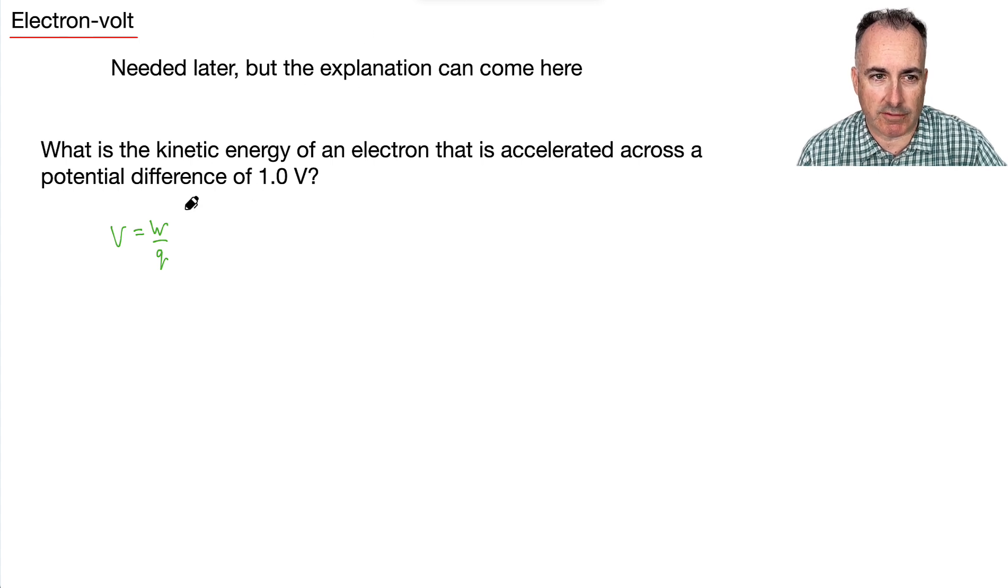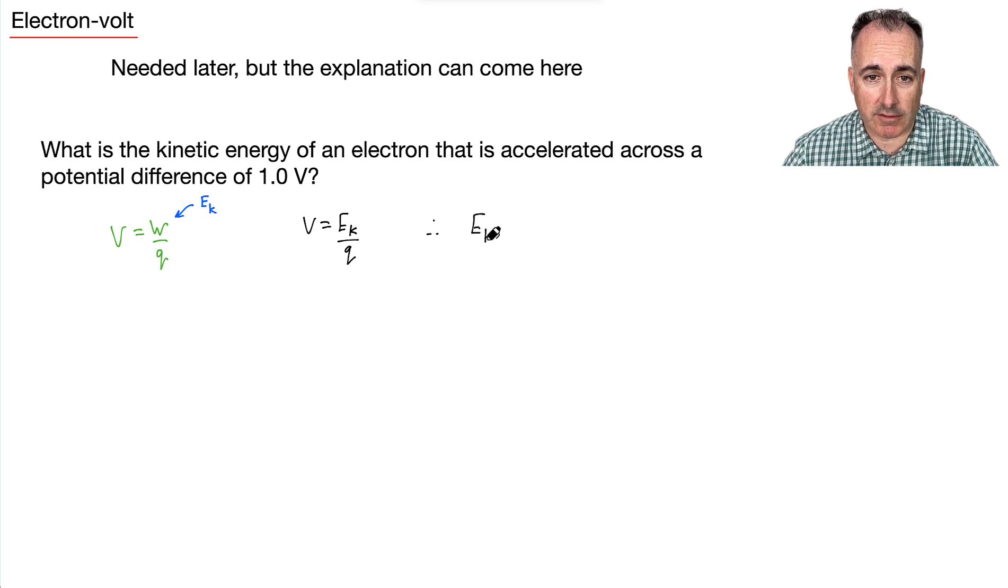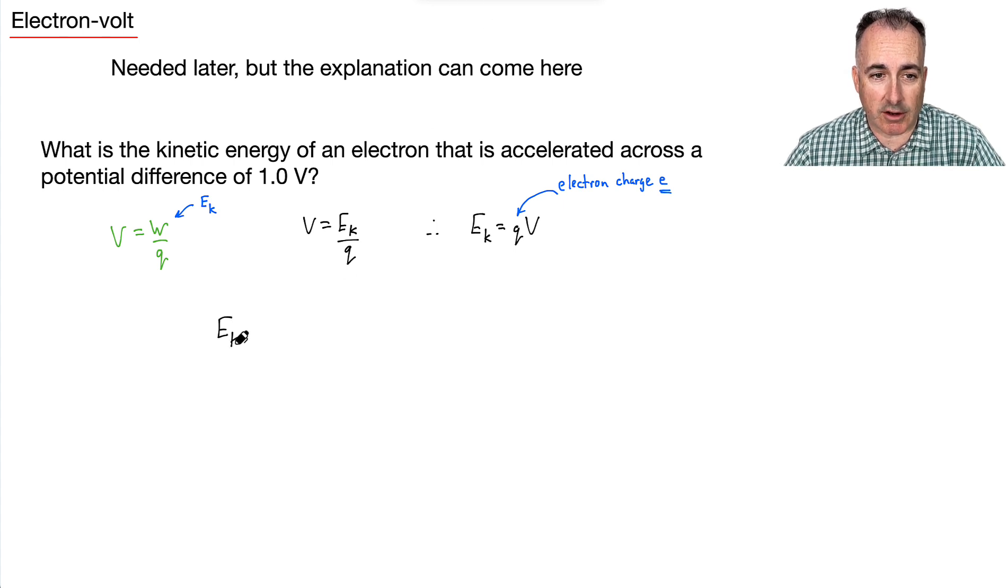Now W is a form of energy. Work is energy. So we can call this the kinetic energy of this electron. So that means we can say that V equals EK over Q. And that means we can define EK of this electron will just be V times Q. But for an electron, we tend to use a little symbol for that. The charge of an electron, we actually write it with a little lowercase e, electron charge e. So that means the kinetic energy of this electron is going to be e times V.